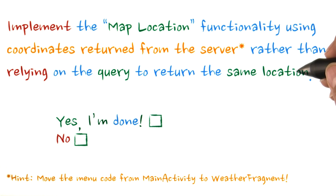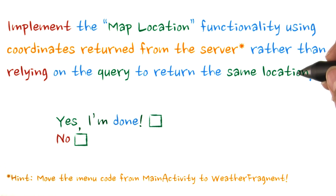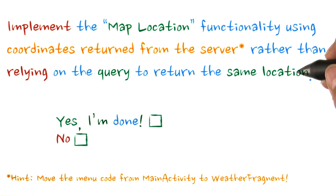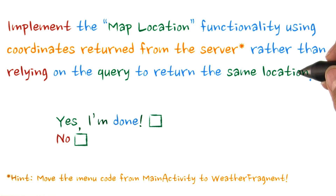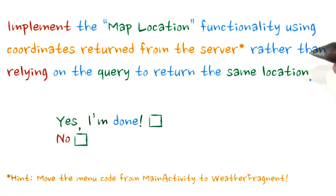All of you detail-oriented people probably noticed that we've never actually used the coordinates we get from the server for location, relying instead on both the Maps API and the Weather API to do the same thing with location queries. Unfortunately, they don't always agree.